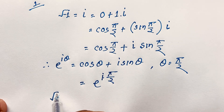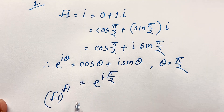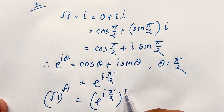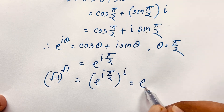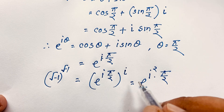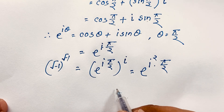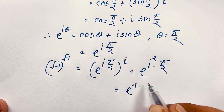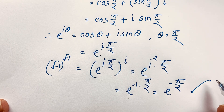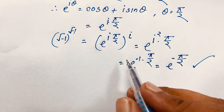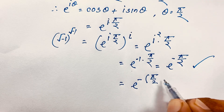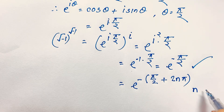Now our question, (√(-1))^(√(-1)), becomes (e^(i·π/2))^i. Using the exponential rule (a^n)^m = a^(nm), this gives e^(i·i·π/2) = e^(i²·π/2). Since i² = -1, we get e^(-π/2). This is our final answer for Method 1, and more generally e^(-π/2 + 2nπ) where n is a member of ℤ.